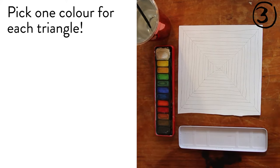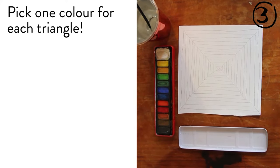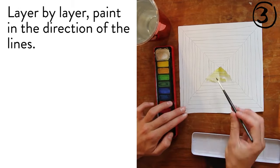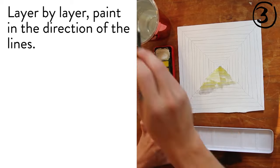Pick one color for each triangle. Layer by layer, paint in the direction of the lines.